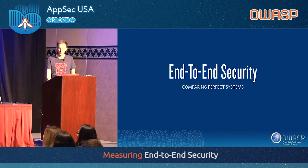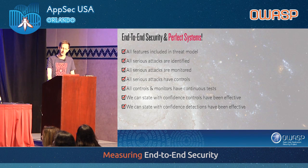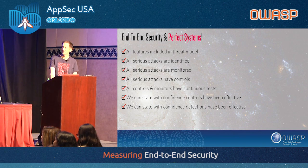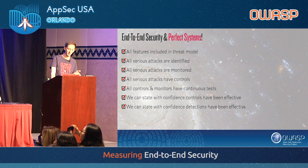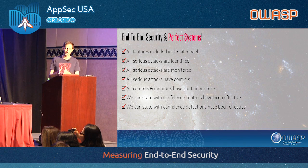Next is end-to-end security. We wanted to find out not only are we getting better, but how well is our threat model actually working and how effective has it been? We came up with the idea of a perfect system: all features are threat modeled, every serious attack has been defined, all attacks are monitored, all serious attacks have controls, and all those controls and monitors have continuous tests — our nightly tests that validate they're working in production. Because of that we can state with confidence that these controls and detections are effective.